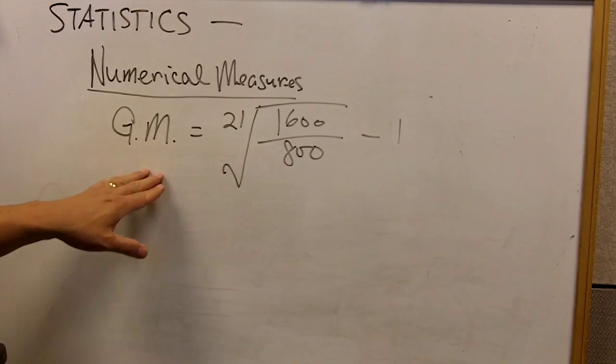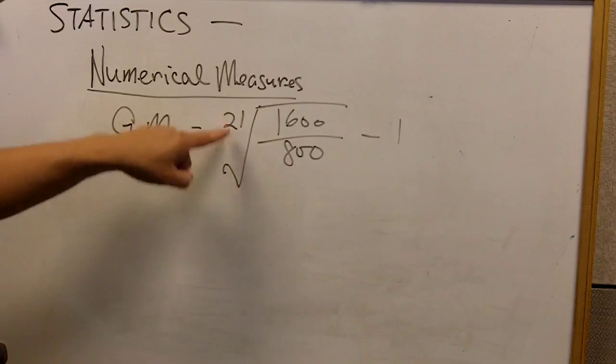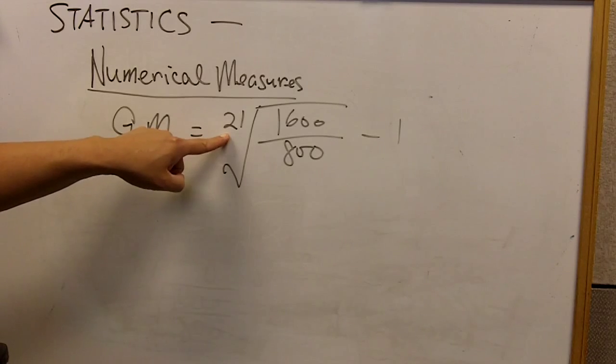So the geometric mean equation says we are going to take the nth root, and n being the number of years apart from 1993 to 2014. So that's 21 years.